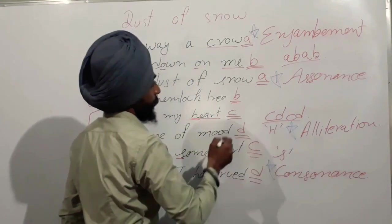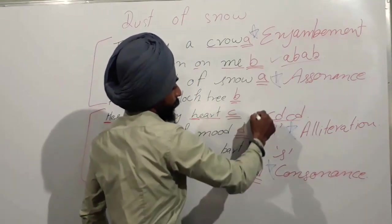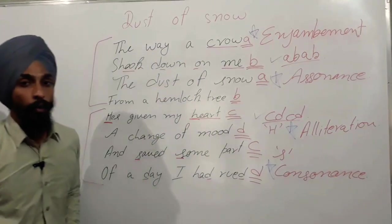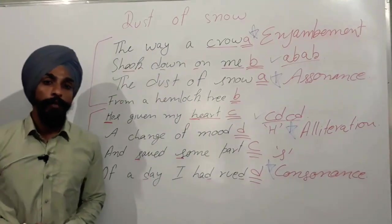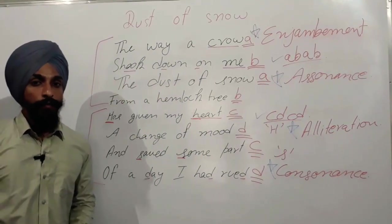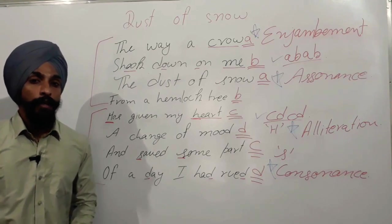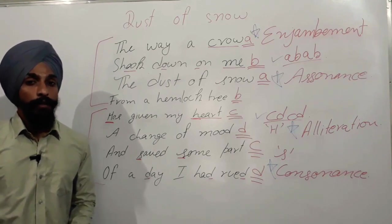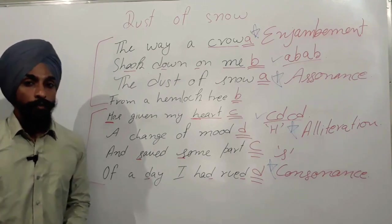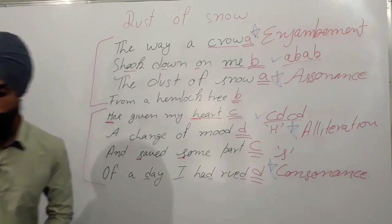So the literary devices used in this poem are: assonance, alliteration, and consonance. The overall rhyme scheme is A, B, A, B, C, D, C, D. Hope this poem is now understood. In next videos, we will discuss some grammatical topics. Thank you so much. God bless you always. Thank you.